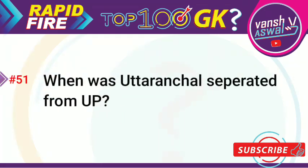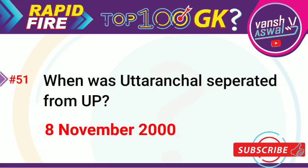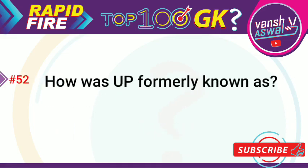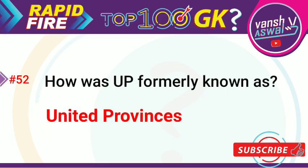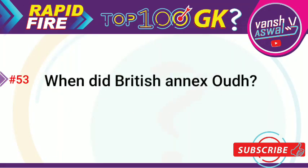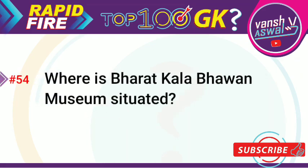Question 51: When was Uttaranchal separated from UP? The correct date is 8 November 2000. Question 52: How was UP formally known? Answer is United Provinces. Question 53: When did the British annex Awadh? The correct date is 1856. Question 54: Where is Bharat Kala Bhavan Museum situated? Answer is Varanasi.